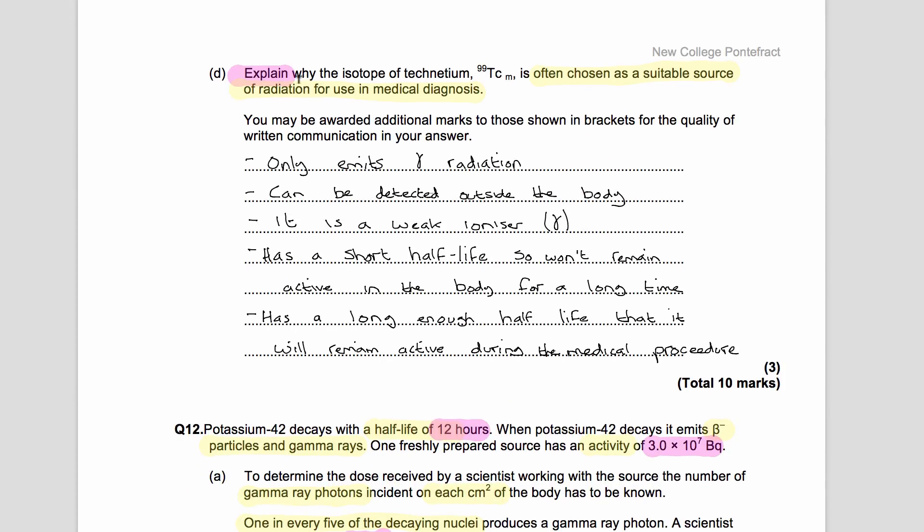And then finally in D, we're asked to explain why the isotope of technetium, so this thing ⁹⁹Tc with this little M on it, is chosen as a suitable source for radiation for use in medical diagnosis. As soon as we see this little M, what that tells us is that this thing is an isotope which has metastable states, so that's the thing where basically if it's an excited nucleus, then it can stay excited actually for quite a long time. So it's not stable, but it's almost stable, so it'll stay excited for quite a long time before it emits a gamma ray and drops down to its ground state. So this thing, we know just by looking at this, is a gamma ray emitter.